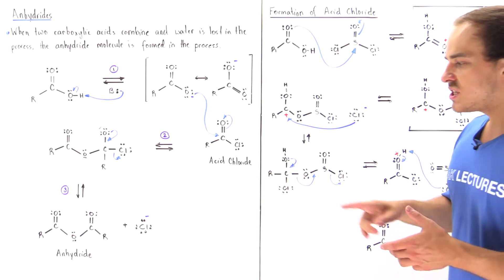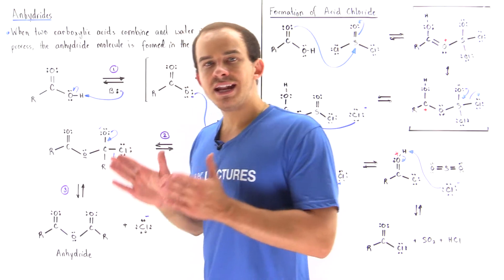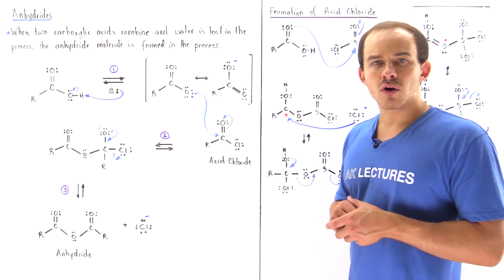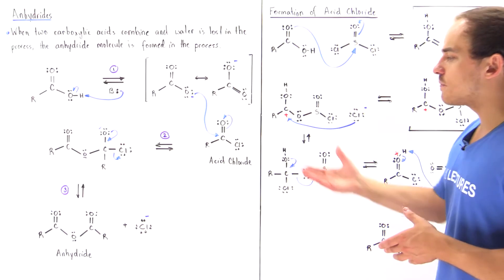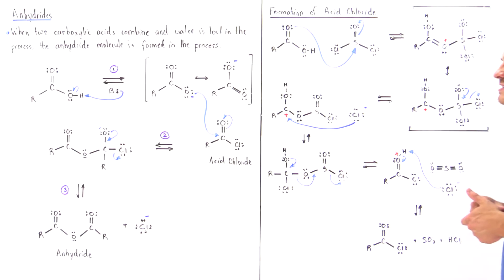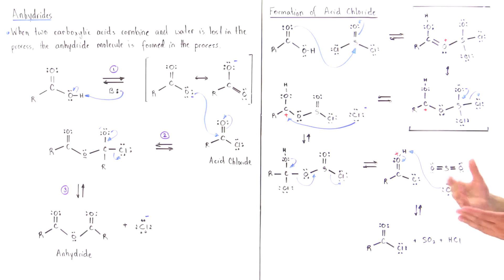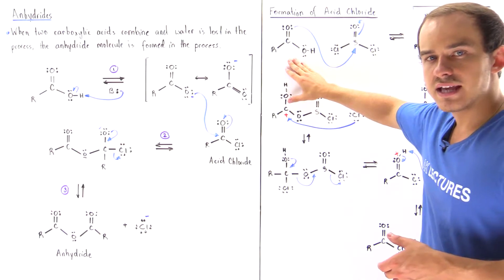To actually form our anhydride we need a molecule known as the acid chloride. So the first step is to actually form this acid chloride. Let's discuss the reaction mechanism for the formation of the acid chloride, beginning with a carboxylic acid.